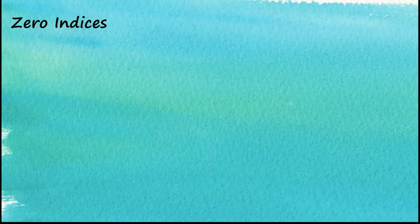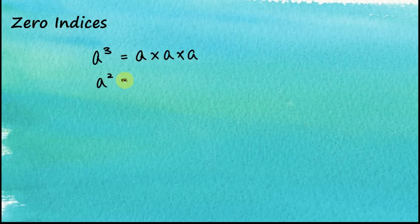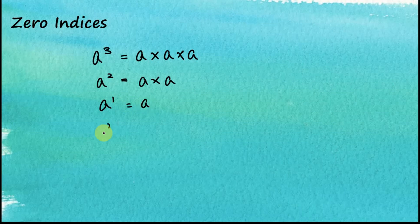Zero indexes. Now we have a very interesting question here. If a to the power of 3 is equal to a times a times a, a squared equal to a times a, so a to the power of 1 equal to a, then what is the value of a to the power of zero? So what do you think? Let's see how we get the value of this.